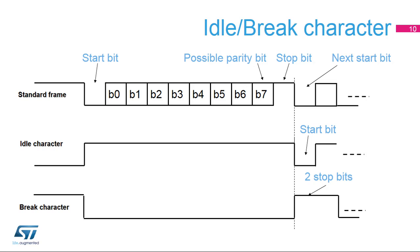The standard frame was described in the previous slide. This slide shows an example of 8-bit data frames configured with one stop bit. An idle character is interpreted as an entire frame of 1s. The number of 1s will include the number of stop bits. A brake character is interpreted as receiving 0s for a frame period. At the end of the brake frame, two stop bits are inserted.